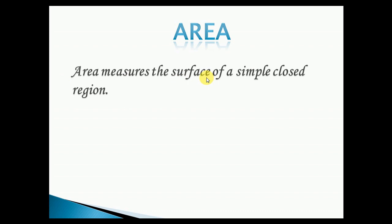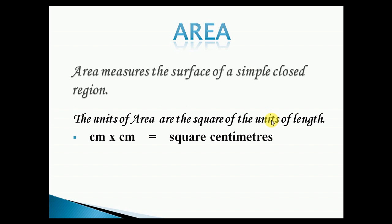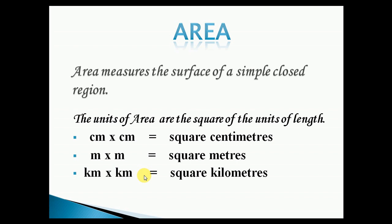Area measures the surface of a simple closed region. In other words, the space occupied by a shape is called its area. The units of area are the square of the units of length. Thus, area can be expressed in square units, such as cm × cm equals square centimeters, meter × meter equals square meters, and kilometer × kilometer equals square kilometers.